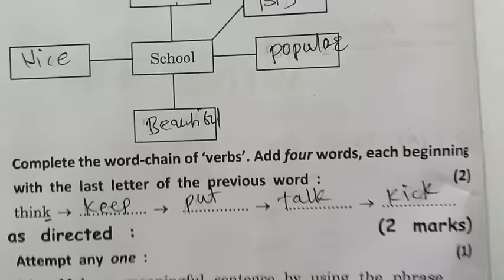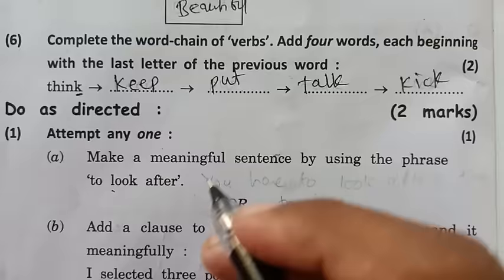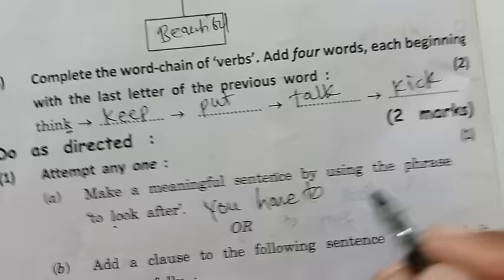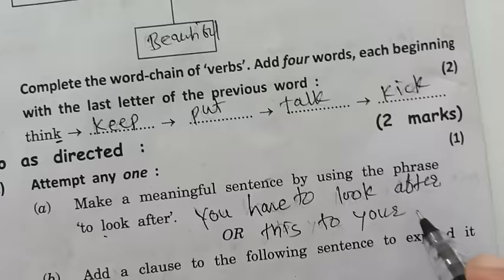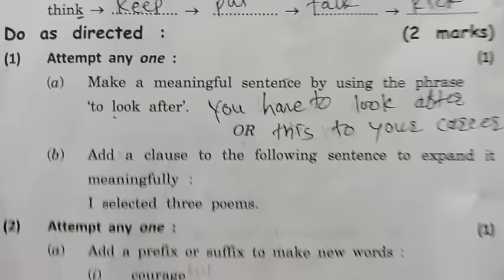Here in 'do as directed,' we have to write a complete sentence using 'to look after.' We can make the sentence: 'You have to look after your career.' You can make your own sentence — if you have a new idea you can make new sentences, it's not necessary to write exactly like me.